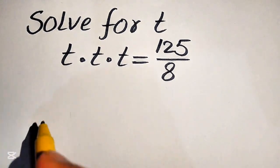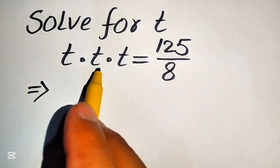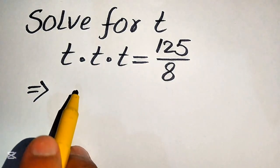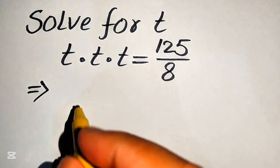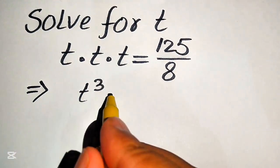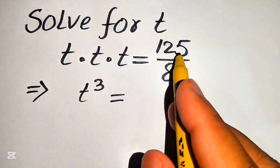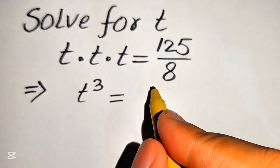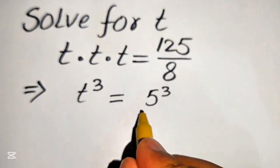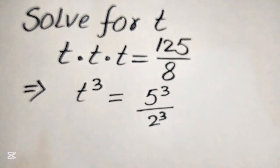The first thing we are going to do is multiply these three terms. If any number is multiplied three times, we write it in cubed form. So this becomes t cubed. Here we can find the prime factors of 125 over 8: it is written as 5 cubed divided by 2 cubed.